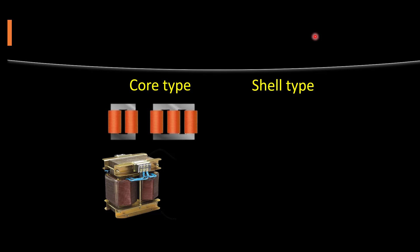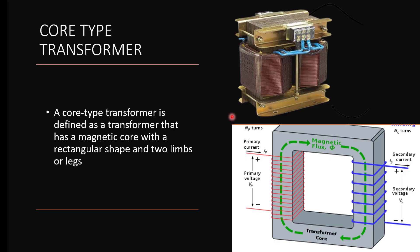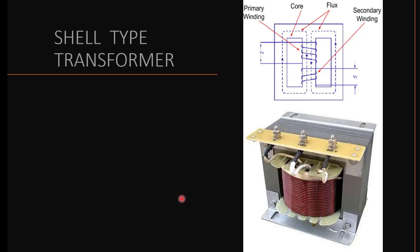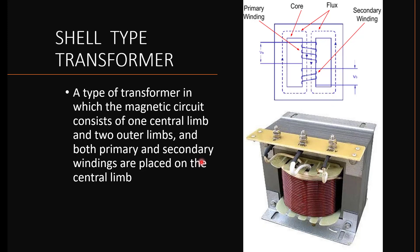Based on core construction, we can divide transformers into core type and shell type. In core type transformers, the magnetic core is in a rectangular shape. In shell type transformers, there is one central leg or limb and two outer legs or limbs. The primary and secondary windings are placed on the central limb. The path of magnetic flux goes through the outer limbs — this construction is called the shell type transformer.